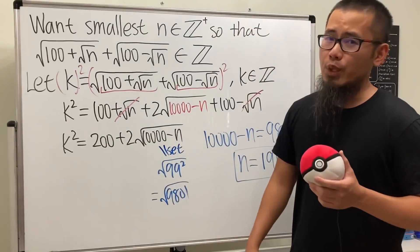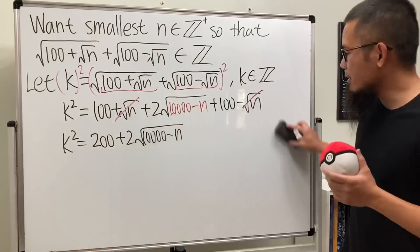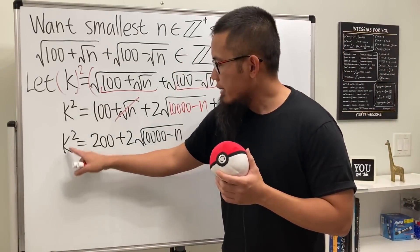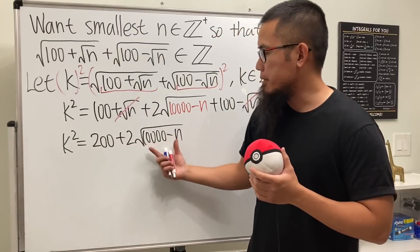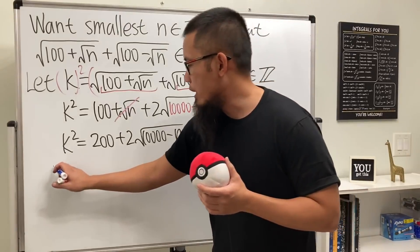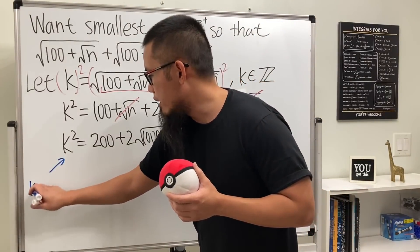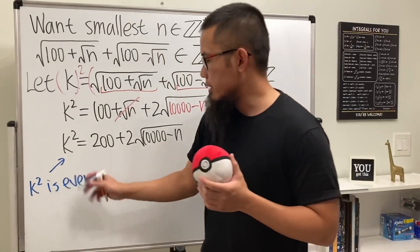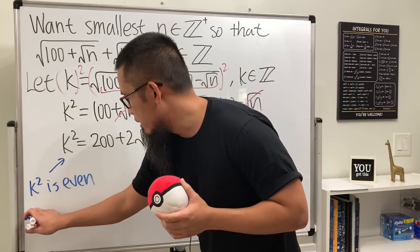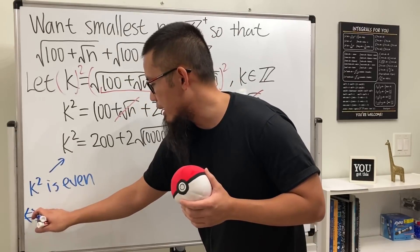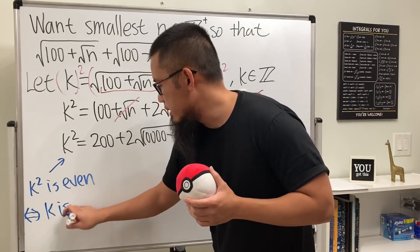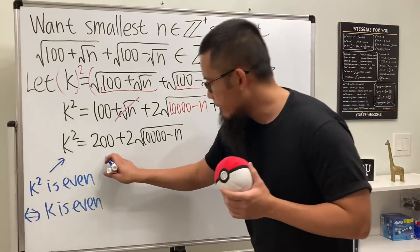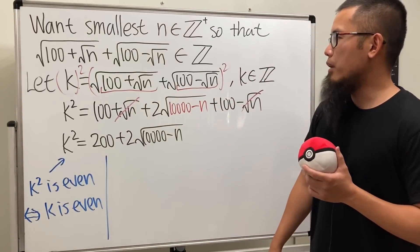We have to make more observations. Since k squared equals 200 plus 2 times the square root of (10,000 minus n), we can factor out 2. This tells us k squared must be even, and because k squared is even, that implies k is also even — and in fact this is a biconditional. So keep in mind that k must be even.